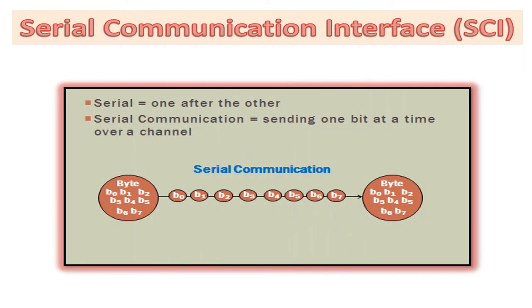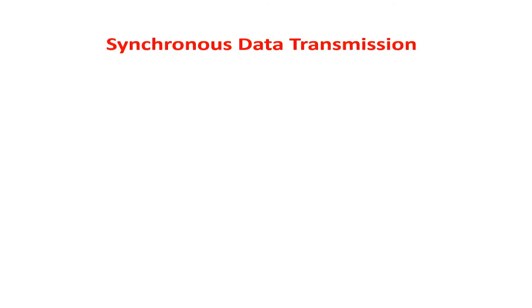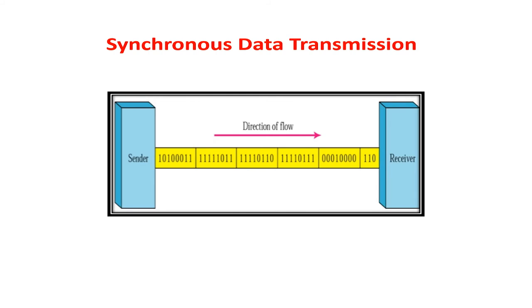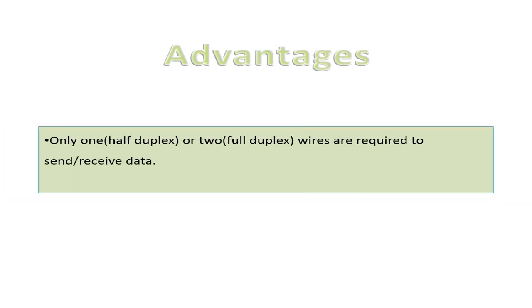Serial input output port or serial communication interface, SCI. Synchronous data transmission: data is transmitted one bit at a time using a clock to maintain integrity between two different devices. Advantages: only one (half duplex) or two (full duplex) wires required to send or receive data, and low cost due to low number of wires.